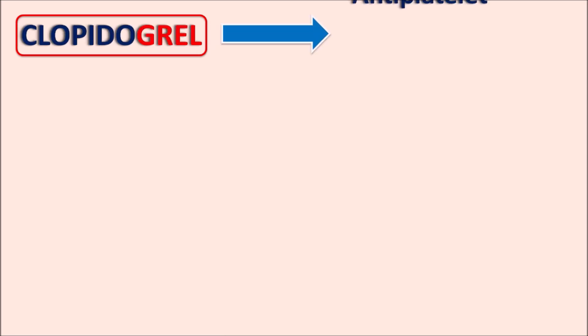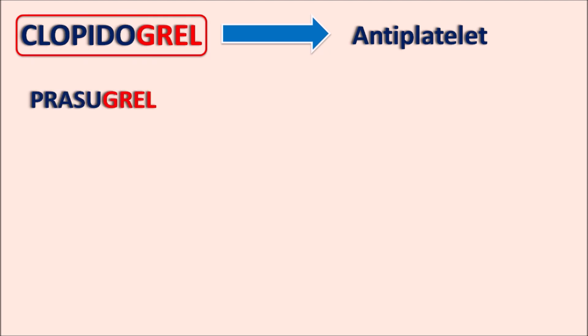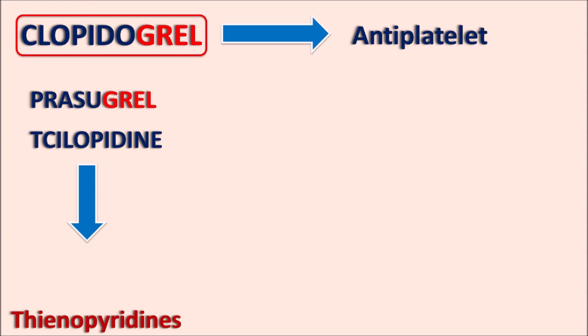What is clopidogrel? We can observe the suffix '-grel' which indicates it is an anti-platelet agent. We have another drug with a similar suffix — prasugrel. Similarly, we have another drug with a different suffix — ticlopidine. All these drugs belong to the same chemical class of thienopyridines.